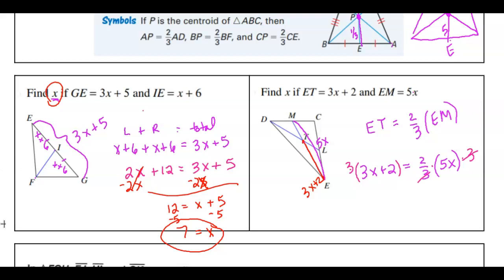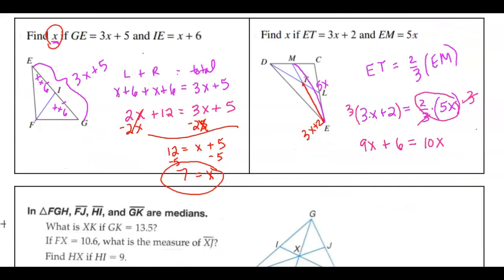So I get 3 times 3X, and then 3 times 2, and then over here we just have 2 times 5X. So that's tricky. So anytime you see that fraction, multiply both sides by 3. So then to get X by itself, I'll subtract 9X. So 6 equals 1X, and that's what they were looking for. It just said, find X.